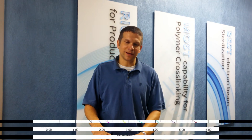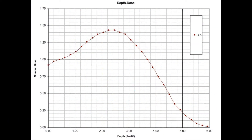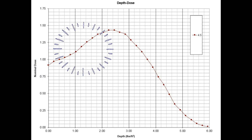So now let's look at a depth dose curve, which relates absorbed dose to depth in the case. Typically, we process at 4.5 MeV. The nominal dose is 1, or 100%, at the surface of the product. As you can see, the dose actually increases right under the surface. This is due to attenuation and scattering of the electrons.